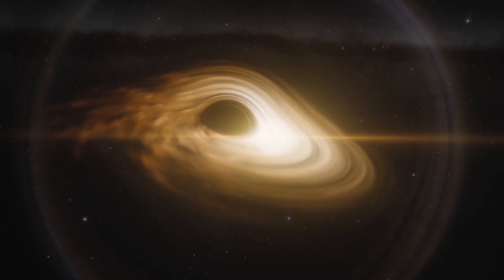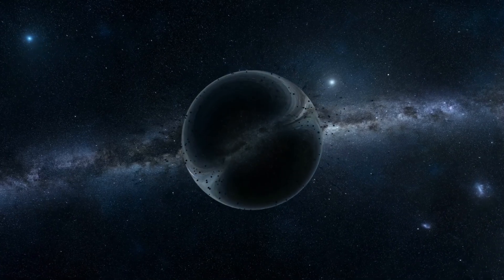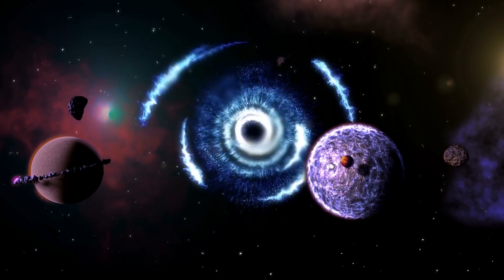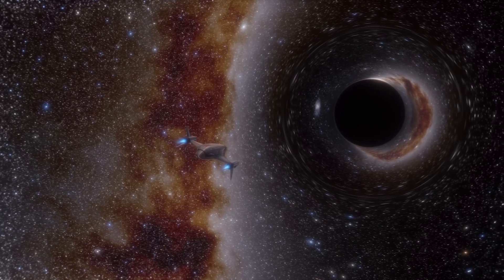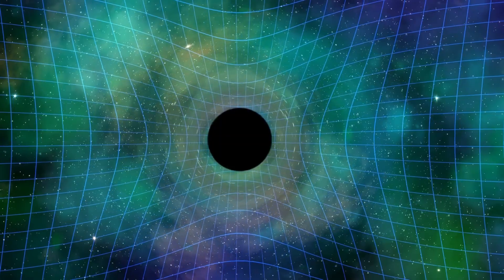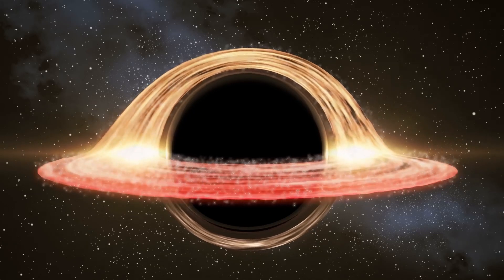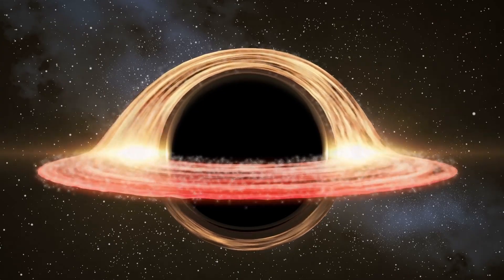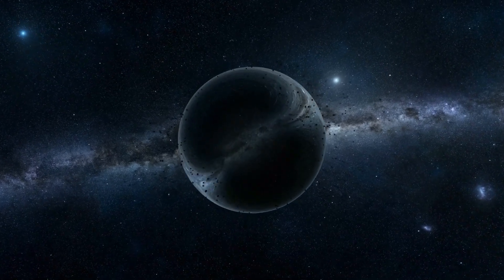However, if a stable Einstein-Rosen bridge existed, it would mean that black holes are not only cosmic devourers, but also portals that could connect us to other regions of space-time. The question then arises whether we could use a wormhole to travel through space and time. Although this is still the subject of speculation and its feasibility has not yet been demonstrated, the theoretical possibility of wormholes opens the door to exploring fascinating concepts about interstellar travel and the connection between different parts of the universe.